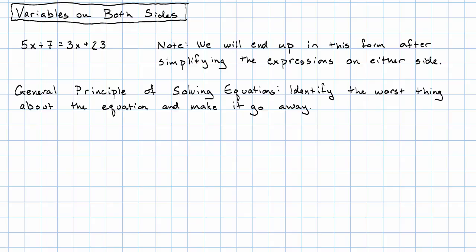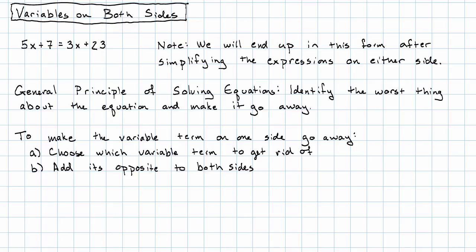How do we do that? To make the variable on both sides go away, we'll choose which side's variable term to get rid of, and then we'll add its opposite to both sides.